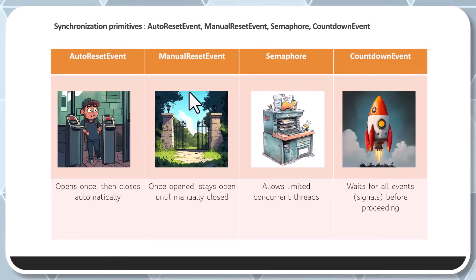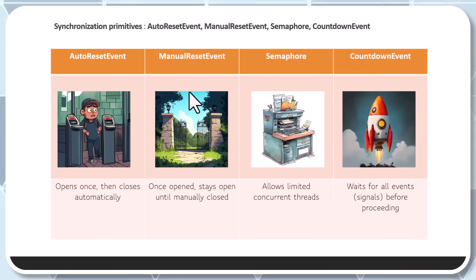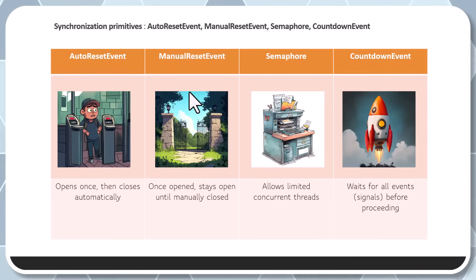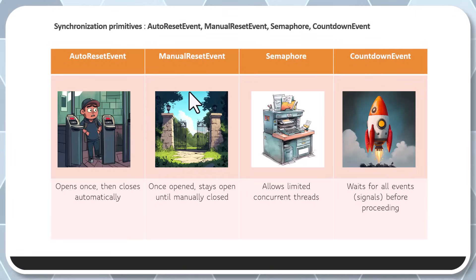Semaphore, and CountdownEvent. We'll go in depth for each of these shortly, but it is very overwhelming initially if we don't understand the concept of why and how they were introduced. An analogy that helps understand this: think of AutoResetEvent as a turnstile — it opens once then closes automatically.